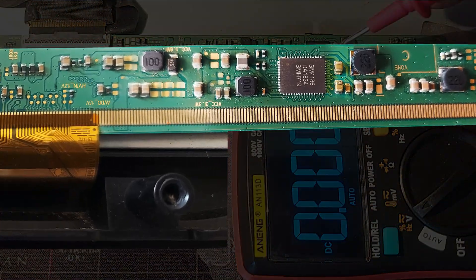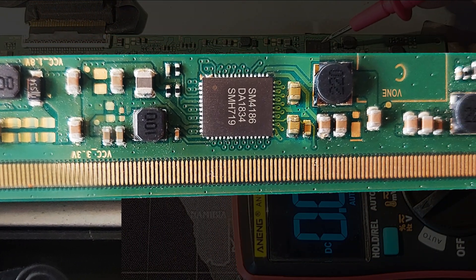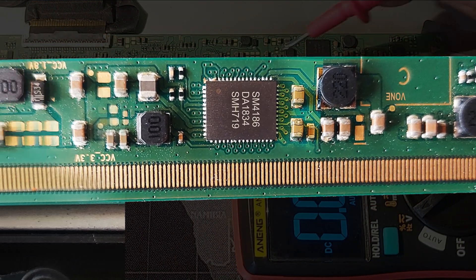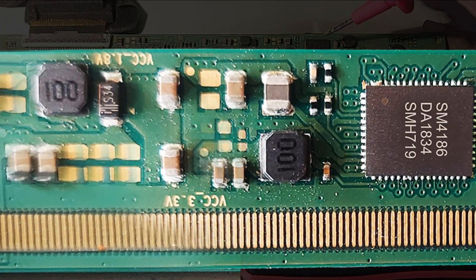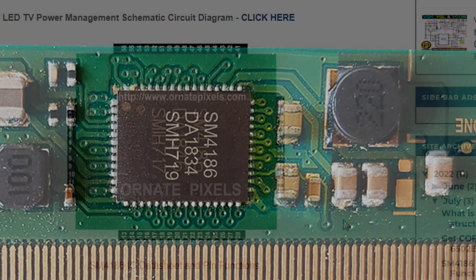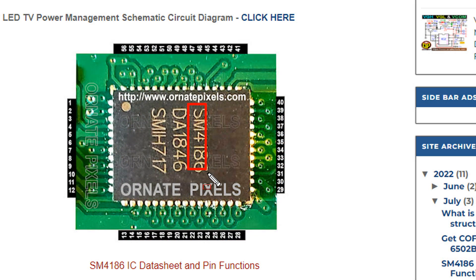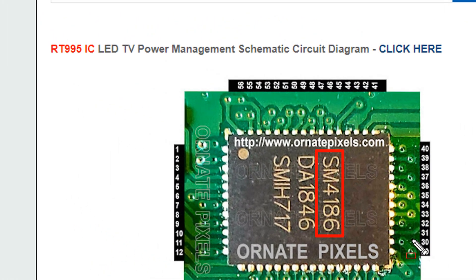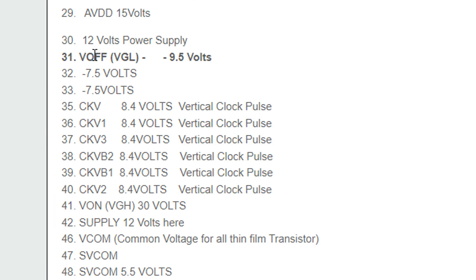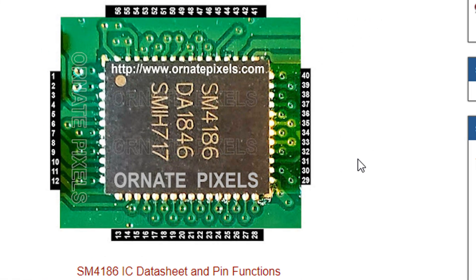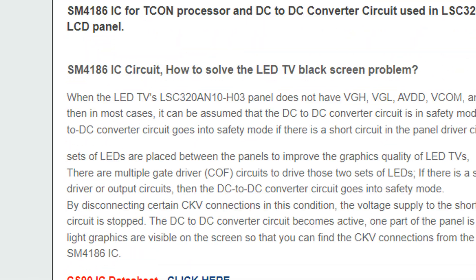Dear friends, this board has no visual or view of test point, so to measure the visual voltage the datasheet of SM4186 IC should be followed. IC number SM4186. The pin functions of the IC are published here. Then look here, visual is output from pin 31. There will be 9.5 volts. To collect all information about SM4186 IC, you can visit Ornate Pixels. The link is in the description of the video.